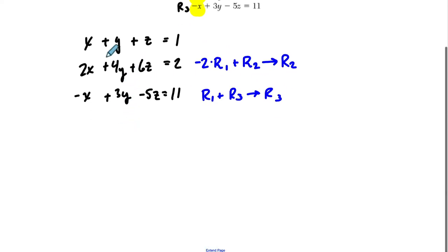If I do that, what happens? Well, the first row is unchanged, okay? But the second row, let's see, we have negative 2x plus 2x, that's 0. Then we still have to multiply everything by negative 2 in the first row and add to the second. So we have negative 2y plus 4y is 2y, negative 2z plus 6z is 4z, and then negative 2 plus 2 is 0.